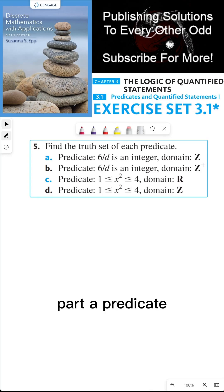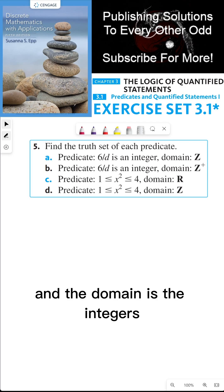Find the truth set of each predicate. Part A, predicate: 6 over D is an integer, and the domain is the integers.